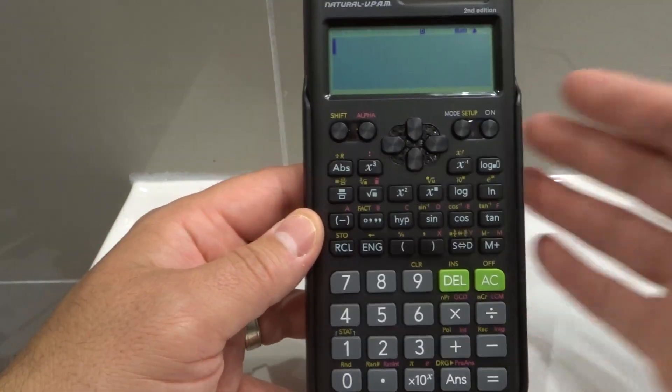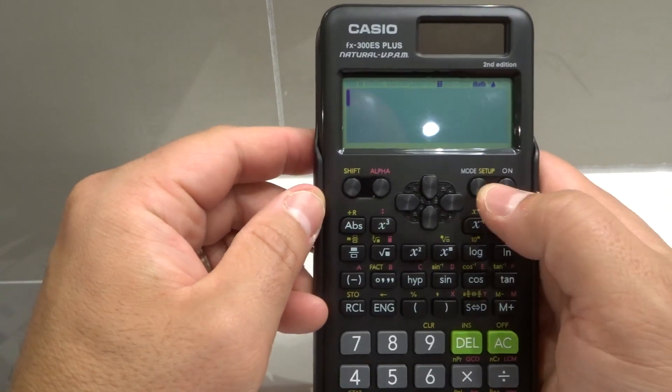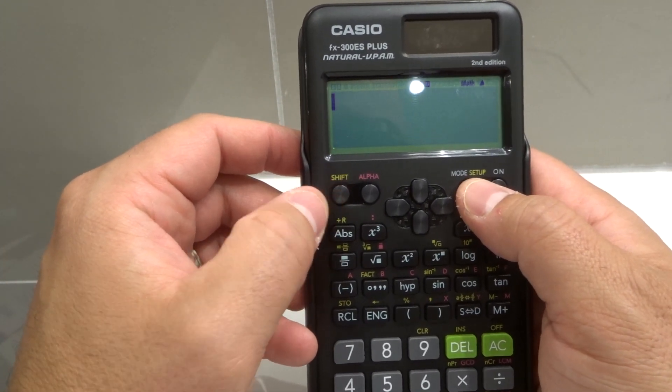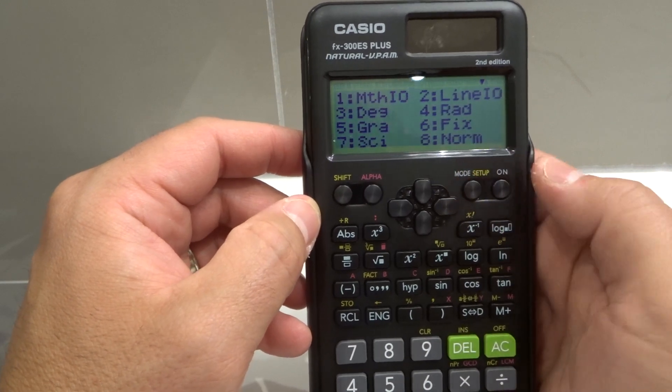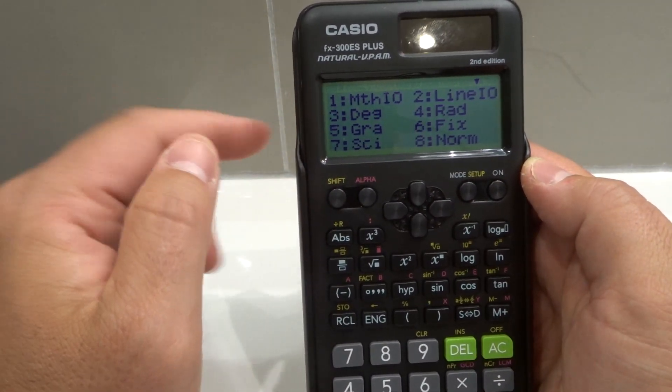If you want to do it on a more permanent basis, you actually need to go to the setup mode. You're going to look for this button right here saying setup. To get the setup, I'm going to push shift and then mode. It brings me to setup.